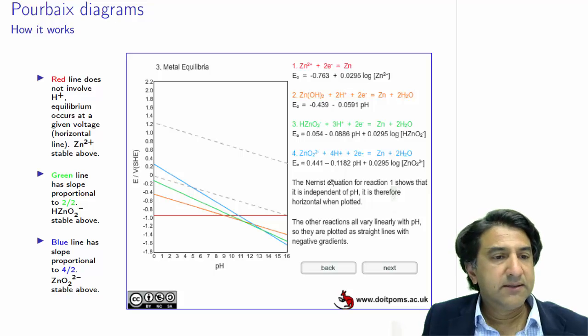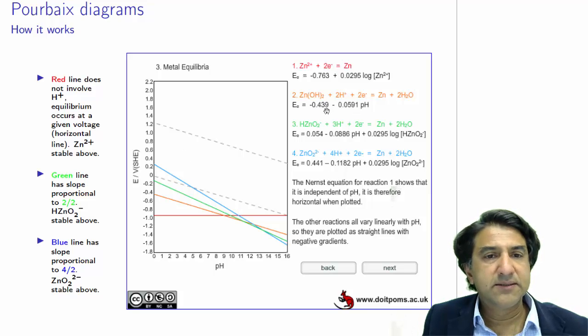OK, now what do these lines mean? On the right hand side, all of these reactions are going to zinc, so what that means is above the red line we have Zn2+ stable, below we have zinc stable. Above the orange line we have ZnOH2 stable, and below we have zinc stable. Likewise for the green and the blue.